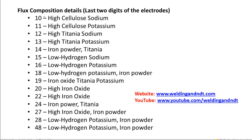If there is '10' in the last digits of the electrode, like E6010, that shows the electrode is made up of high cellulose sodium. In the case of E6013, the last two digits are '13', so '13' represents that the electrode is made up of high titanium potassium. And in E7018, the last two digits are '18', which designates that the electrode flux composition is low hydrogen potassium iron powder.